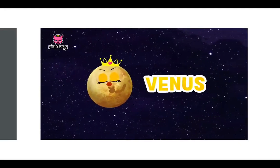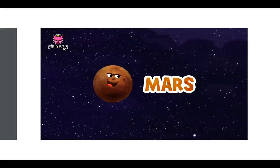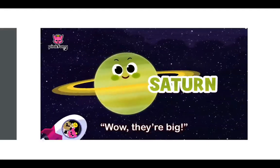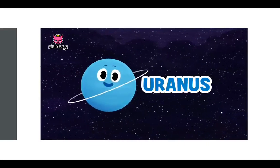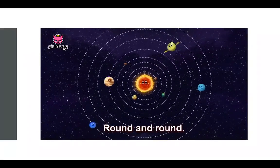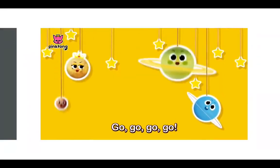Mercury, Venus, Earth and Mars. Jupiter, Saturn. Wow, they're big. Uranus, Neptune, round and round. Go, go, go, go.